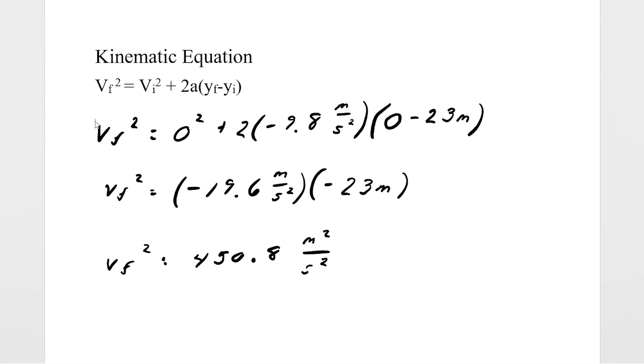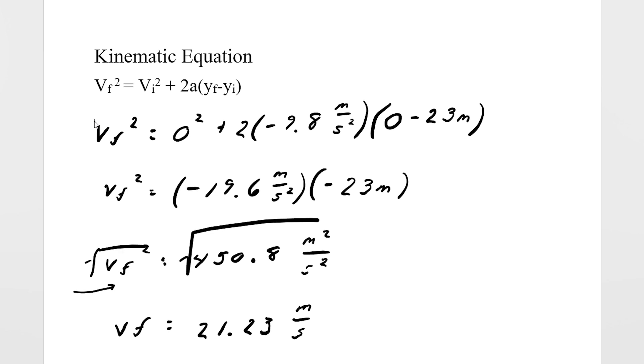From here we need to solve for v final, so we're going to square root both sides, and this gives us a final velocity of 21.23 meters per second. And when we translate this to miles per hour, this is actually 47.49 miles per hour that he's traveling at when he hits the ground.